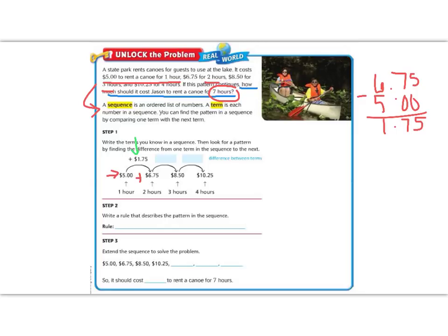So then from 6.75 plus 1.75, let's add and see and make sure we should get 8.50. So 5 plus 5 is 0, carry the 1, that's 10. 7 plus 7 is 14 plus 1 is 15, carry the 1, 6 plus 2 is 8, and drop our decimal. We got 8.50. Perfect. We're going to continue our pattern by adding another 1.75, and that gets us to 10.25.